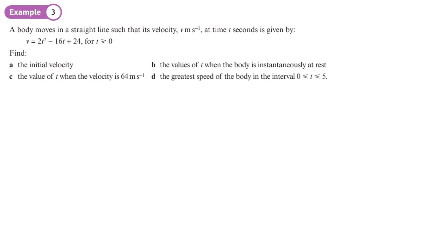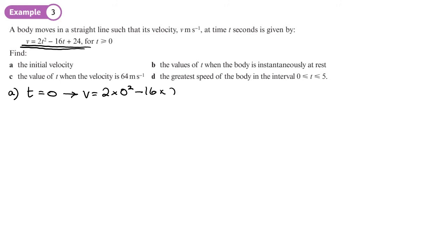A body moves in a straight line with velocity given as a function of time: v = 2t² - 16t + 24. Part a: find the initial velocity. Initial means t = 0, so v = 2×0² - 16×0 + 24 = 24 metres per second.